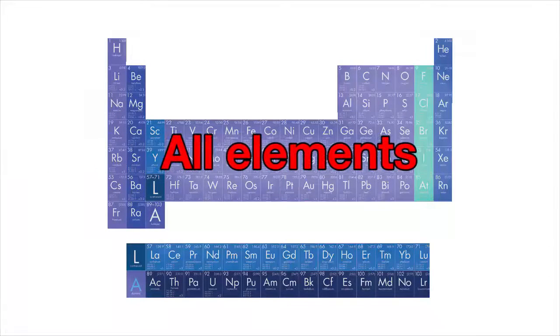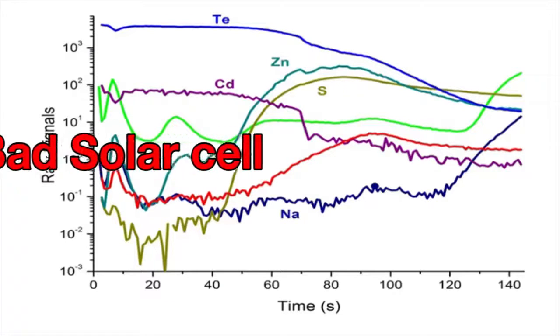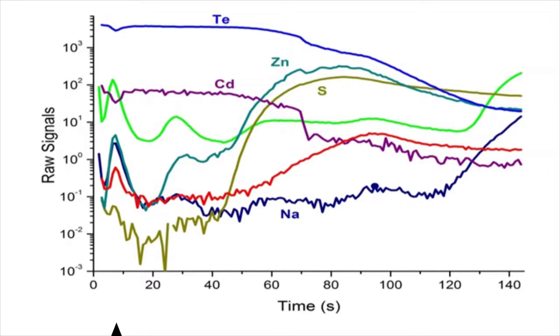All elements can be detected by PPTOF-MS, from major elements to low concentration elements such as dopants and contaminants. Furthermore, detection and identification of unexpected elements is made easy with a full mass spectrum available at any depth point—a real asset for failure analysis and process monitoring.